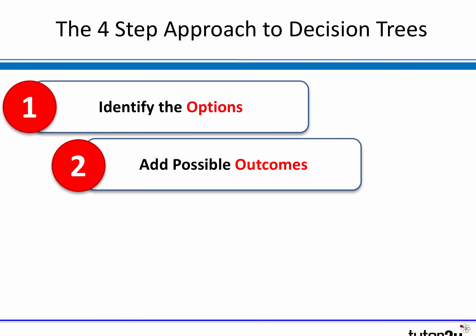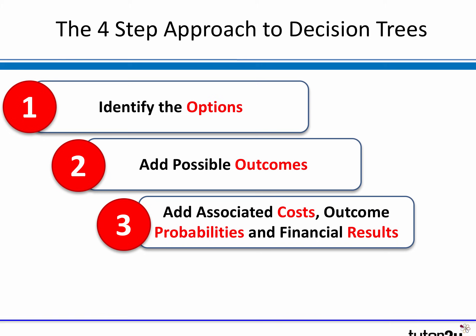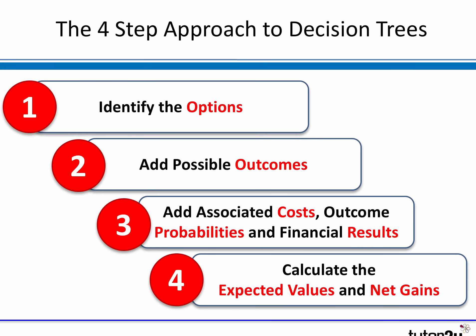For each option, we add some possible outcomes. In most cases in your exam there will be two outcomes from each option, occasionally three. For each outcome, we add the costs of taking that option, the probabilities that these outcomes might happen, and the financial results from each outcome. Those are the useful pieces of information to do some calculations, because we then calculate the expected values from those outcomes and the net gain. That's the four-step approach.